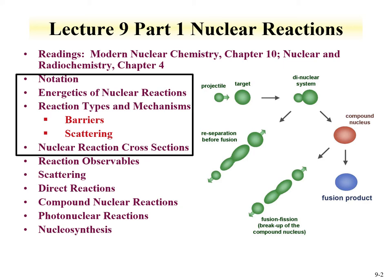The first part of the lecture on nuclear reactions will cover nuclear notations. We've already described nuclear notations and used them in the course; we will formally go over them in this chapter. We'll also discuss the energetics of nuclear reactions within Part 1, some reaction types and mechanisms, and the need to overcome barriers. Charged particles need to overcome the Coulomb barrier, while neutrons do not — a big difference in how they react.